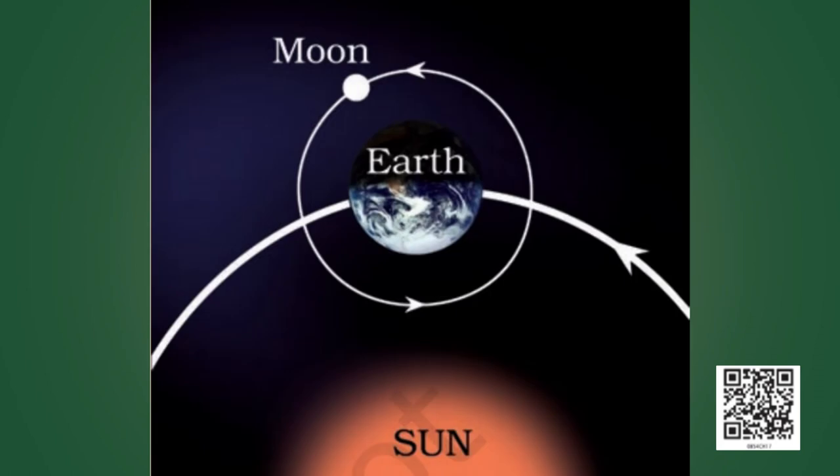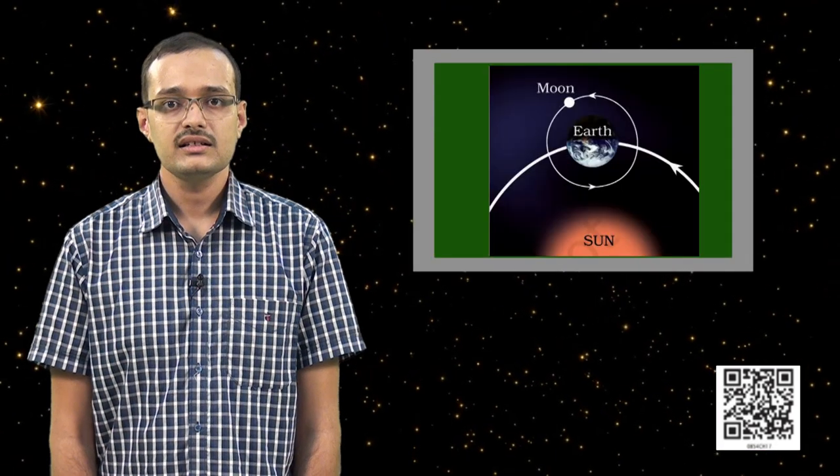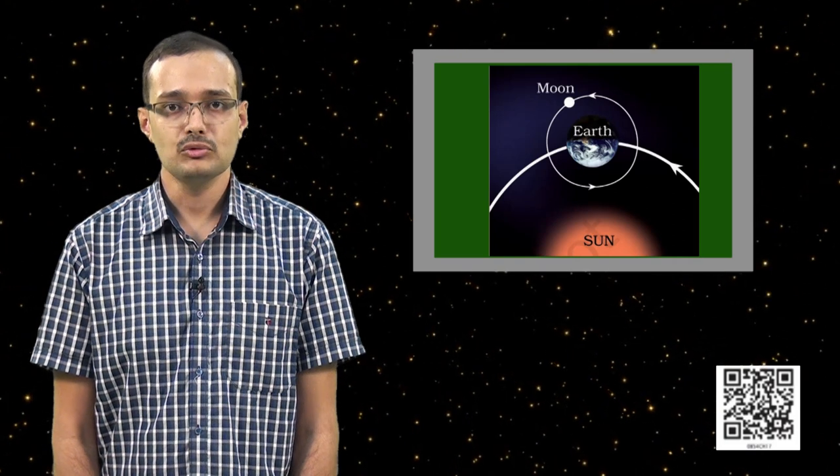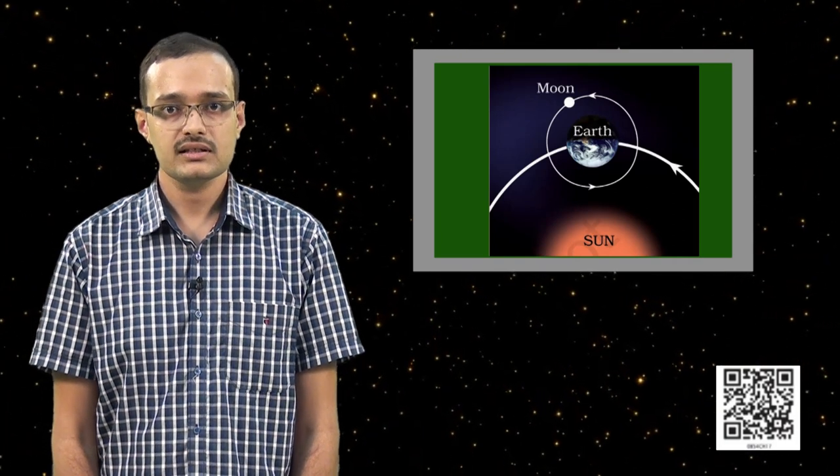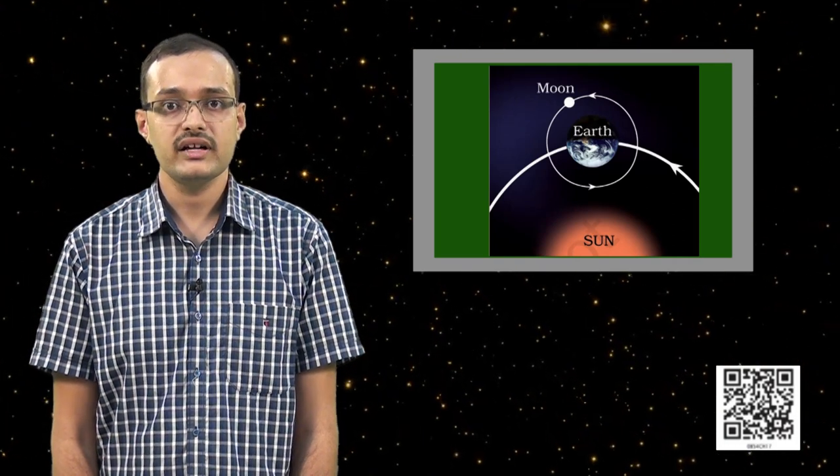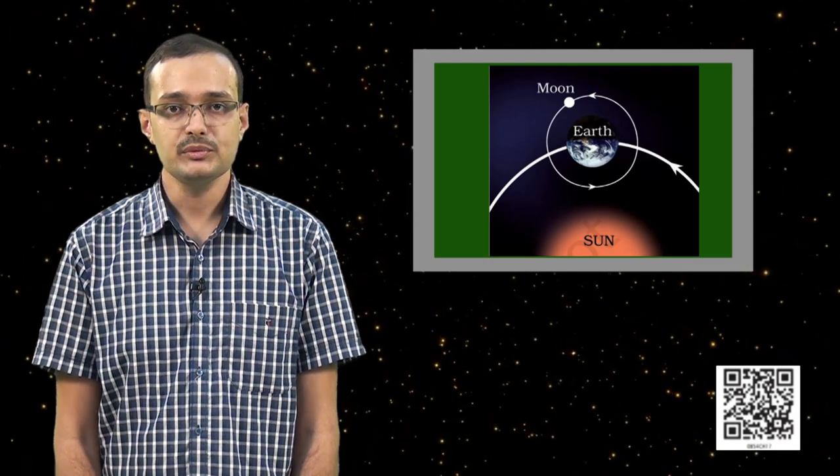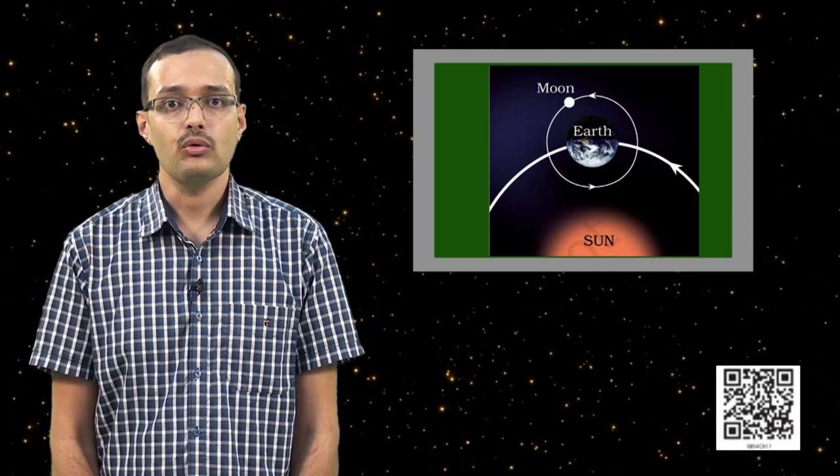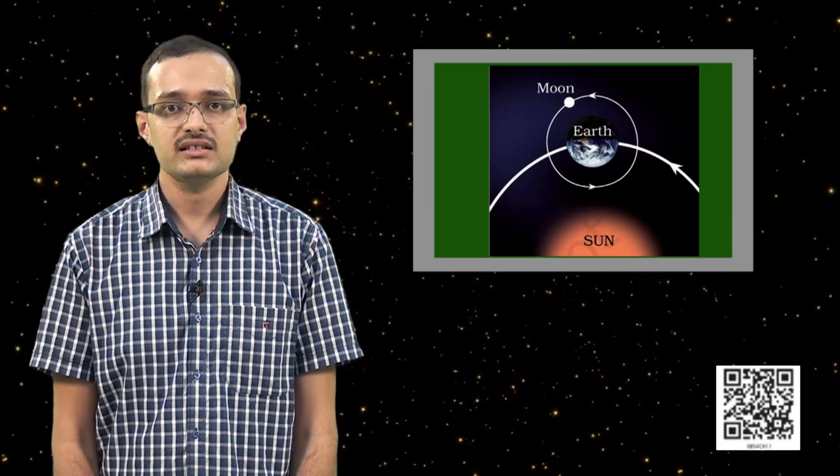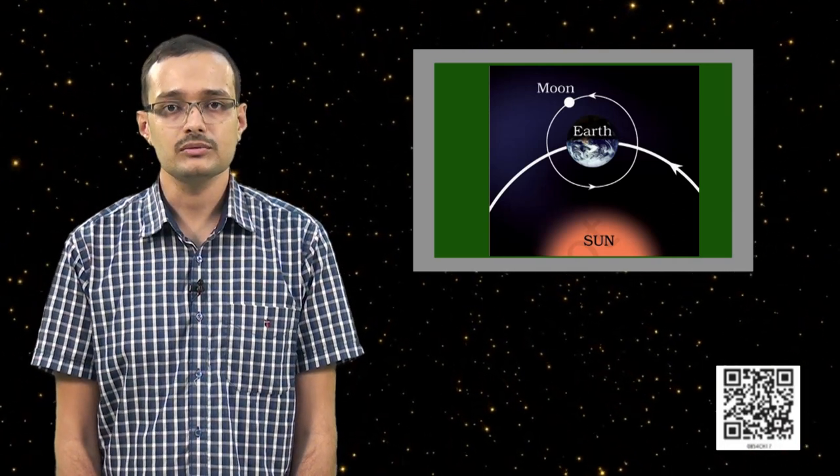In addition to moving around the earth, the moon also rotates about its own axis, just like the earth rotates about its axis. And hence, moon also has its own sunrise and sunset. Interestingly, the number of days taken by the moon to move once around the earth is the same as the number of days taken by the moon to rotate about its axis, which means we get to see only one side of the moon. The far side of the moon is never observable from earth.